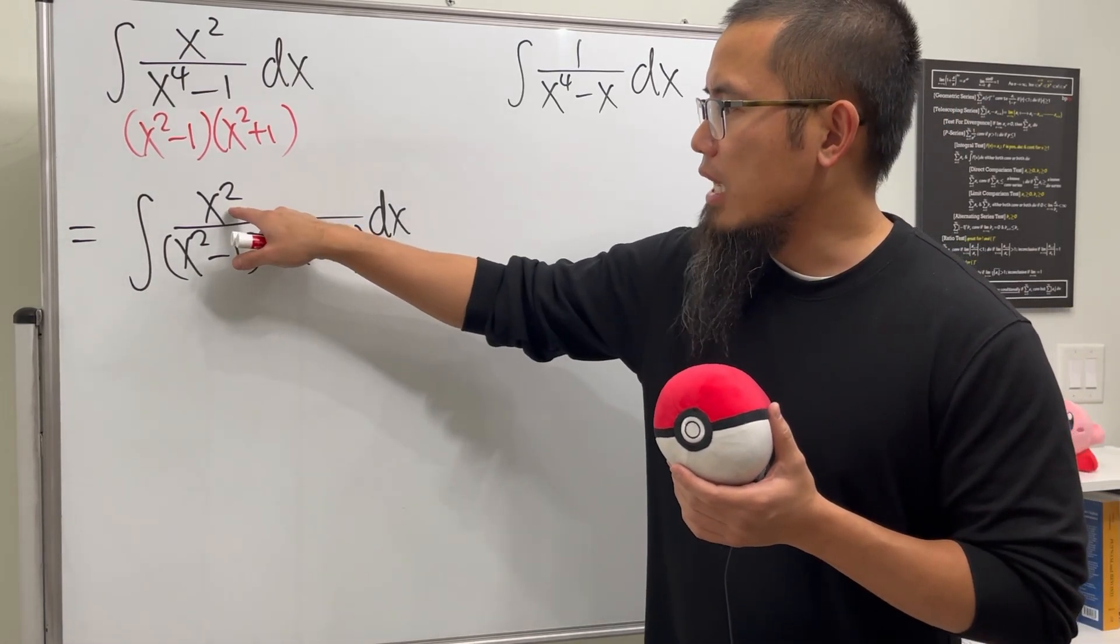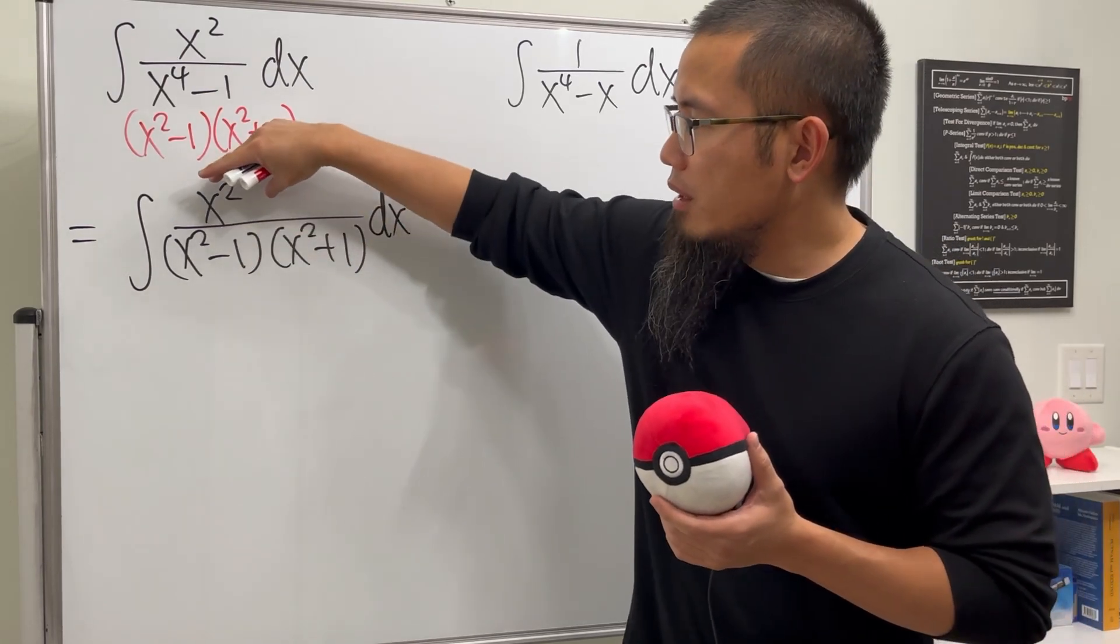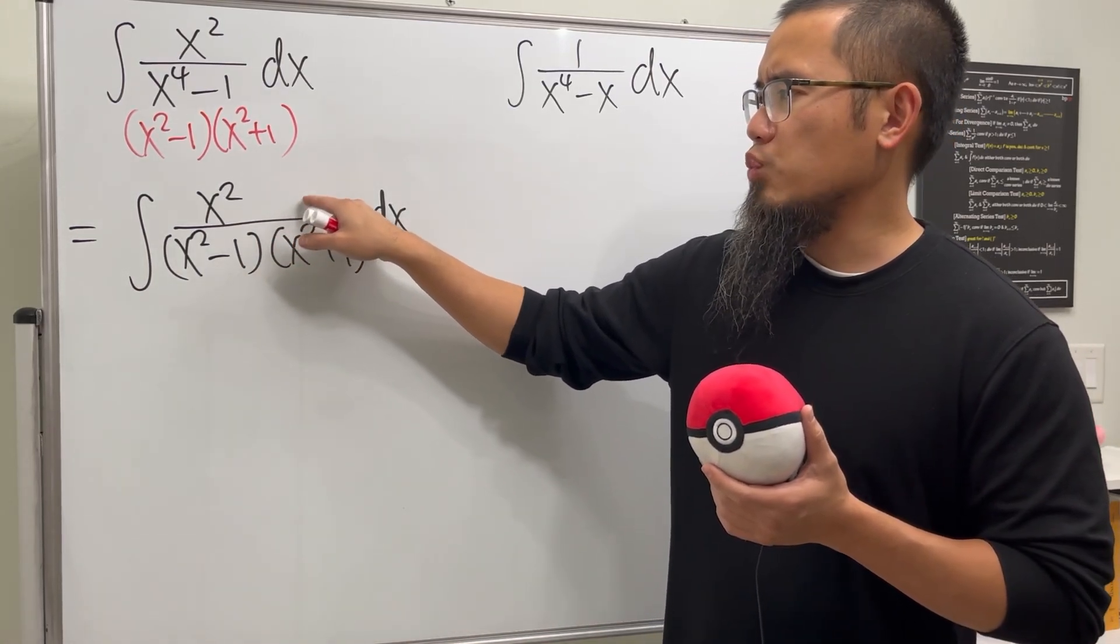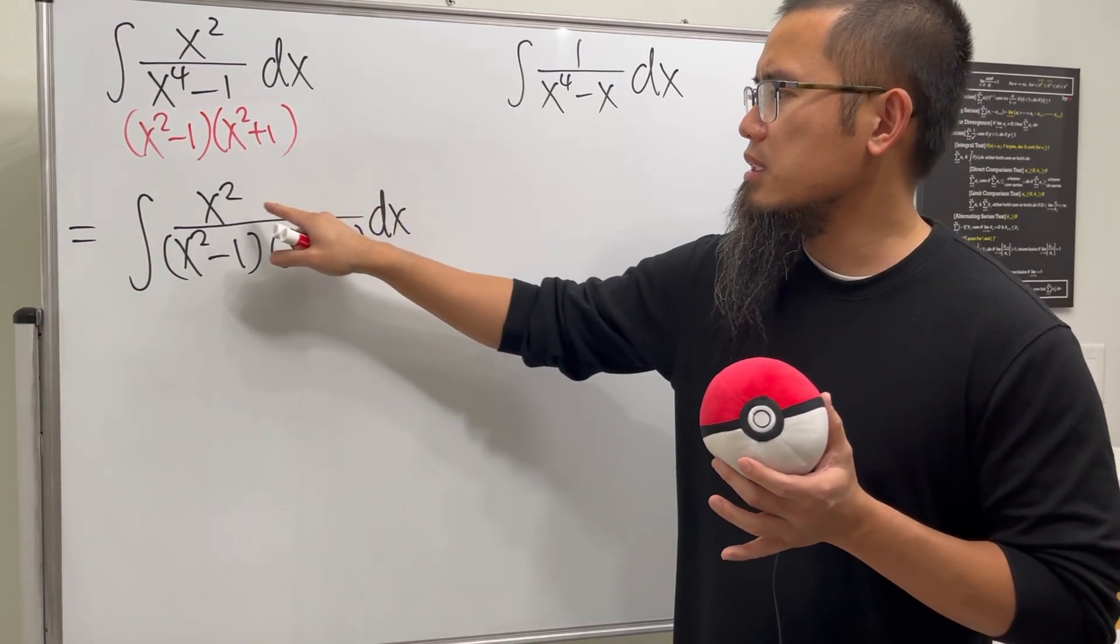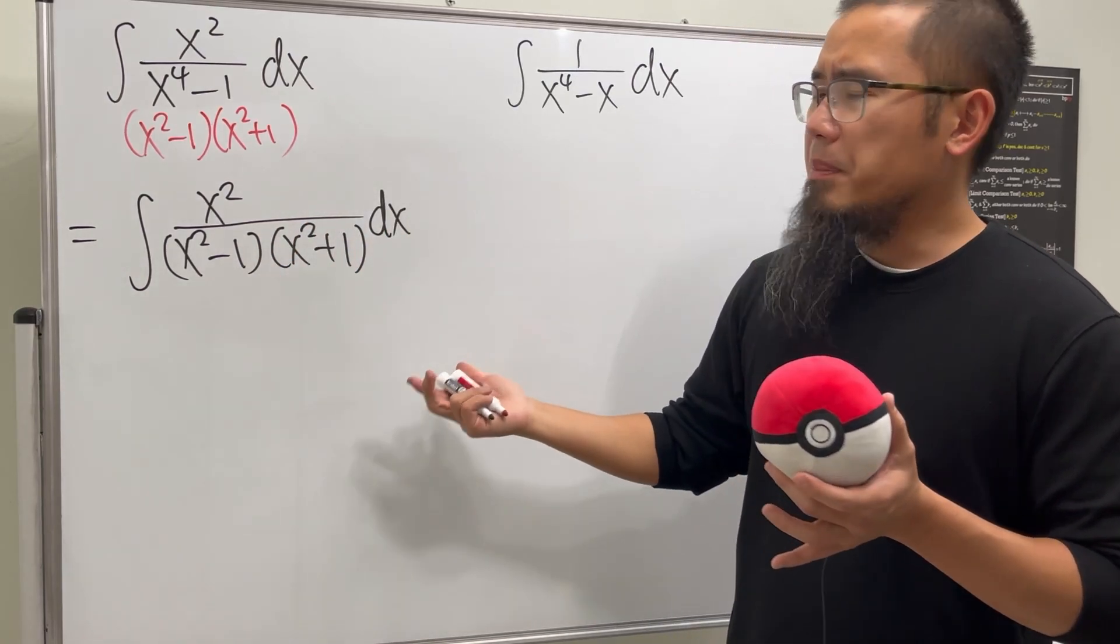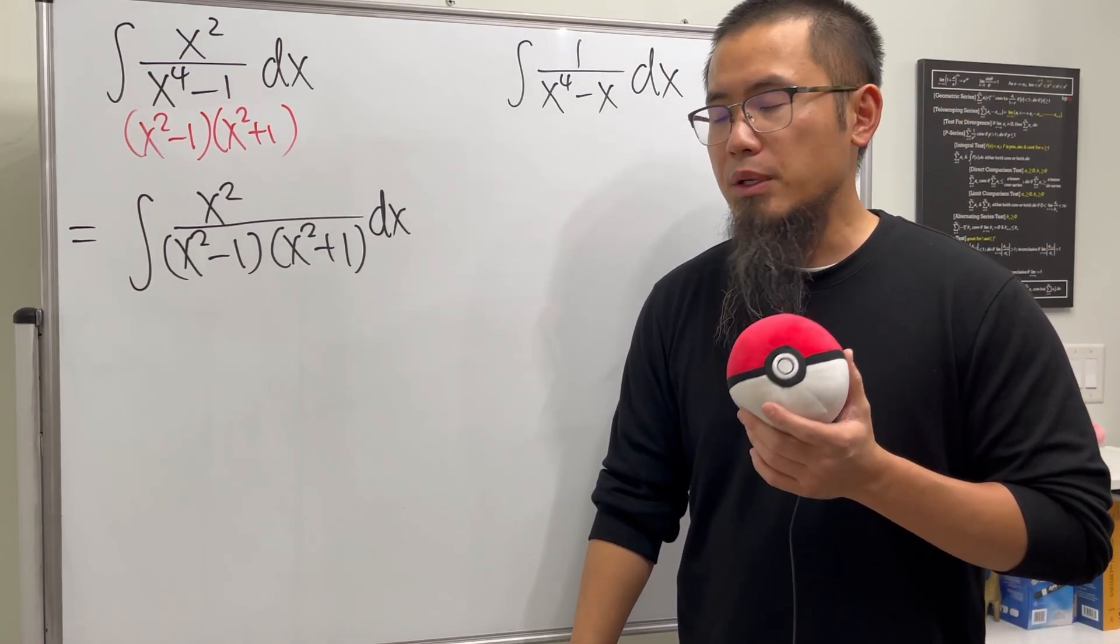Wouldn't it be nice if on the top here we have x² - 1? Yeah, because that way, this and that will cancel. So am I going to just minus 1 here and then plus 1? No, not really, because if I do that, the plus 1 over the denominator, it might be just as hard as the original.